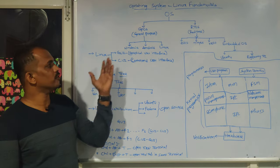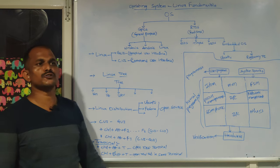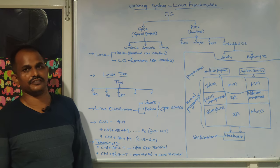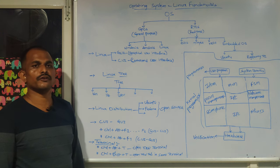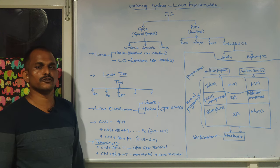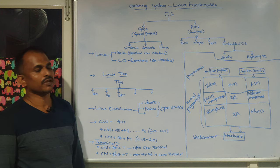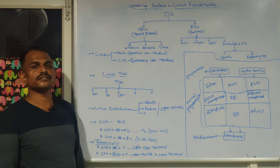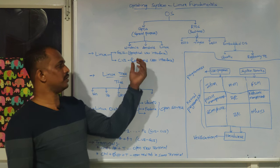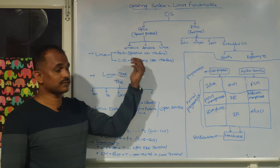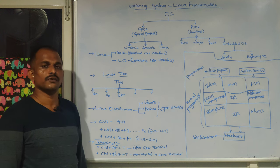General purpose operating systems are Windows and Linux, used in our computers for daily activities. Many of you will write Windows XP or Windows 11 in your resumes. Operating systems are available in two ways: one is GUI — graphical user interface — and the second is CUI — command user interface.